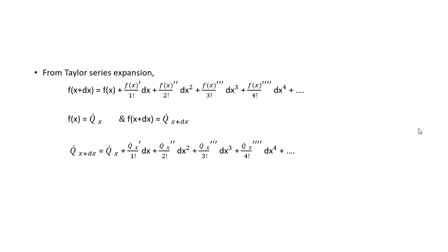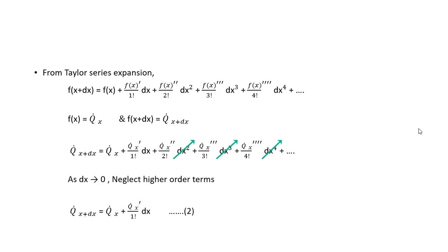Since we have divided the entire fin into an infinite number of elements, the length of each element tends to zero. Therefore the second, third, and higher order power terms become very small and we can neglect them. So we write q̇_(x+dx) as q̇_x plus (dq̇_x/dx)·dx. We have now obtained the rate of heat transfer going out from the element in terms of the rate of heat transfer coming in.